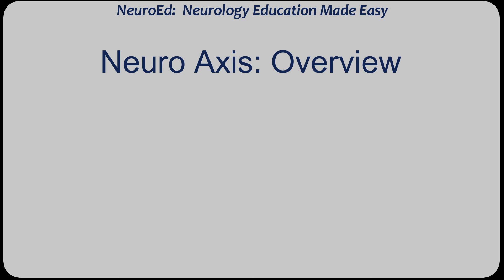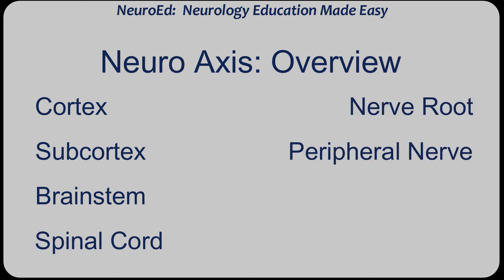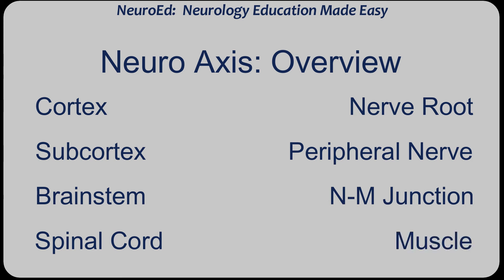To help you understand the neuroaxis, I'm going to simplify each level into a few simple signs and symptoms, which are the hallmarks of each level. What I need you to do is memorize these hallmark signs and symptoms. From proximal to distal, the neuroaxis is: cortex, subcortex, brainstem, spinal cord, nerve root, nerve, neuromuscular junction, and muscle. These eight levels must be memorized. Memorize these eight levels, and then let's start talking about the hallmark signs and symptoms of each.